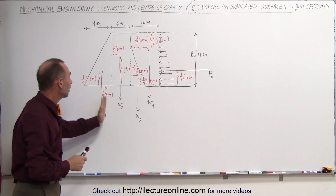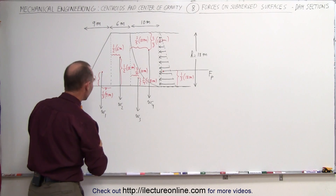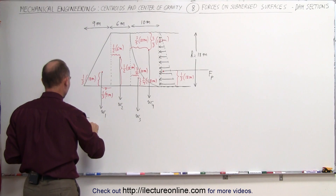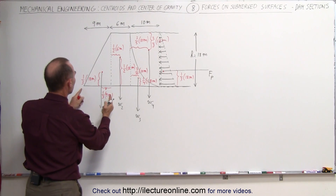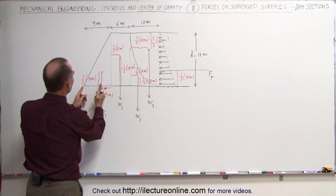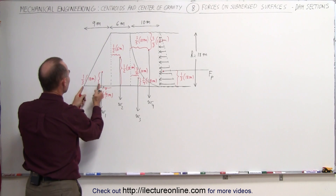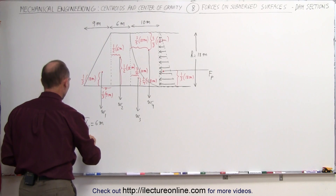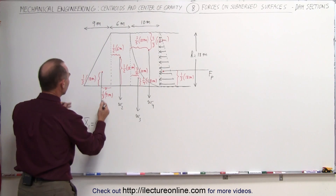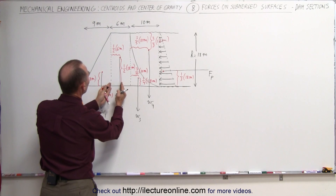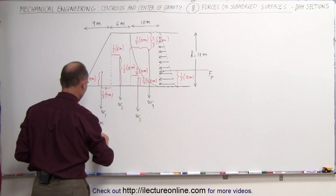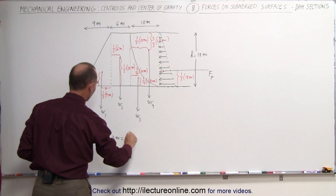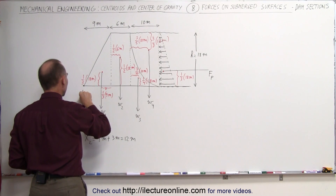Now let's find the centroids of these four portions of the dam, including the water. The centroid x1 — since one-third the distance is at nine meters, that means two-thirds is six meters from the start. So the first centroid is six meters. The second centroid x2 equals nine meters plus an additional three meters — so nine plus three equals 12 meters from point A, which we define here as the reference point.